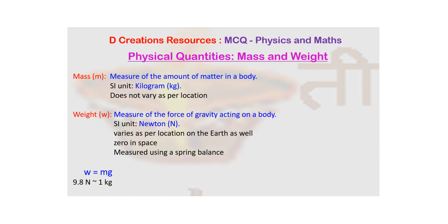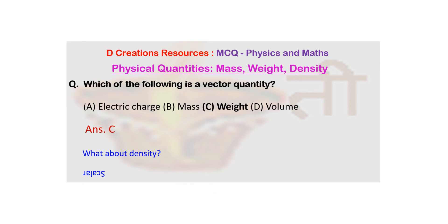From this description, and from the fact that weight is a force, the answer is clear: weight is a vector. So in this question, electric charge, mass, and volume are scalars, and weight is the vector. Now, purposely I have also asked about density — density is mass divided by volume. It is a ratio of two scalar quantities, so density is also a scalar; it does not require direction. We will come up with more questions in further episodes. Thank you.